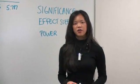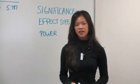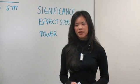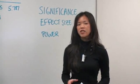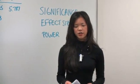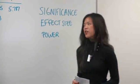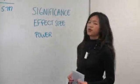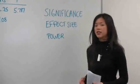We're still talking about an ANOVA, which is a one-way analysis of variance. That means that we've got one independent variable and one dependent variable. When you're doing an ANOVA, there's always three things that you want to consider.